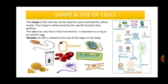Next is the shape and size of cells, and also the number of cells. The shape of a cell may or may not be fixed. For example, amoeba and WBCs do not have a fixed shape, while other cells, as seen in the picture, have many fixed shapes. Their shape is actually determined by the specific function they perform. The size of cells may vary from a few micrometers in diameter — which is microscopic — to as big as an ostrich's egg. The number of cells in a body is related to the size of the organ or the body.